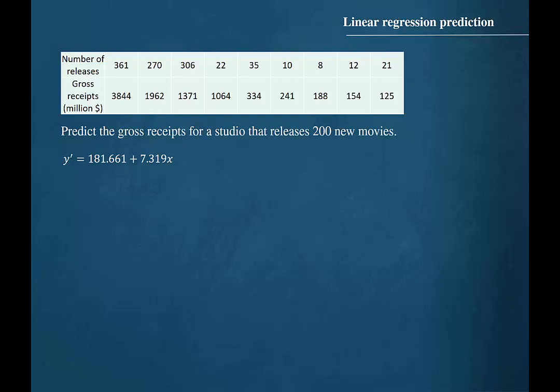That equation is y prime equals 181.661 plus 7.319x, where the independent variable x represents the number of releases and the dependent variable y represents the gross receipts.